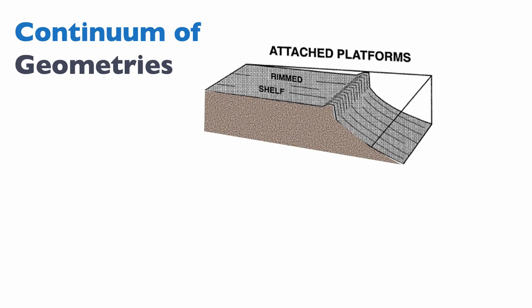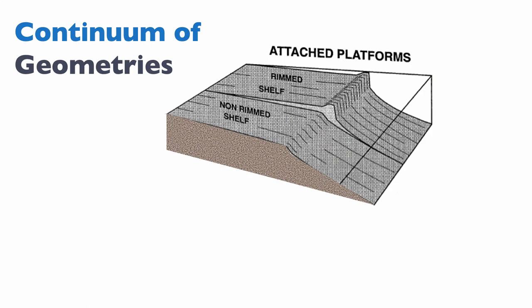If we look at the potential geometries, on the one hand we have the ability to have a shelf — relatively flat top carbonate systems. The classic shelf is the rimmed shelf. A rimmed shelf is effectively an attached platform that has a rim of corals or framework builders. It need not be corals; we will see that this can change through time. There's also the option to have a flat top platform without a rim — a non-rimmed shelf.